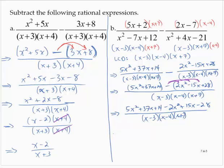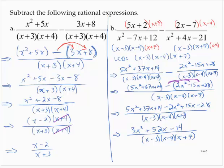Combining like terms now: 3x squared plus 52x minus 14, over x minus 3 times x minus 4 times x plus 7. We should check to see if the numerator can factor — can we factor 3x squared plus 52x minus 14? It turns out we can't, so we're done.